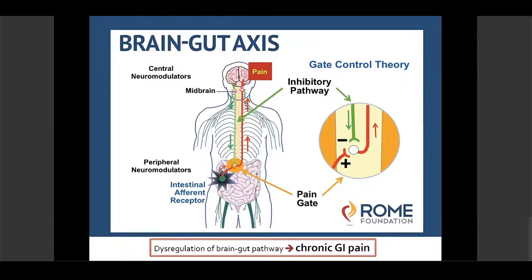One way we can help control this gate is by distracting the patient. Distraction, focused attention, meditation, hypnosis, and also neuromodulator medications involved in the noradrenergic and serotonergic pathways can all help control this gate. Dysregulation of this brain-gut pathway leads to chronic GI pain.